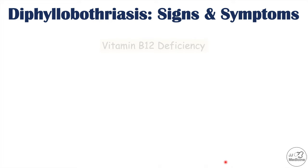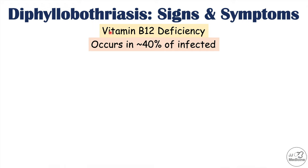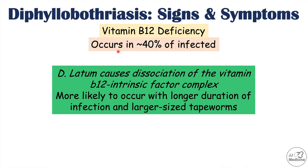Most characteristic of this infection is vitamin B12 deficiency, occurring in approximately 40% of patients infected with a Diphyllobothrial species. D. latum causes dissociation of the vitamin B12–intrinsic factor complex; intrinsic factor is critical for proper absorption of vitamin B12. A vitamin B12 deficiency is more likely with longer duration of infection and with larger-sized tapeworms, as larger tapeworms absorb and disrupt more of this B12–intrinsic factor complex, increasing the likelihood of deficiency.